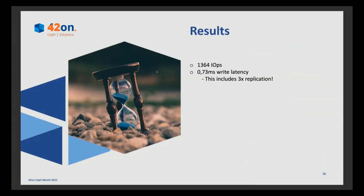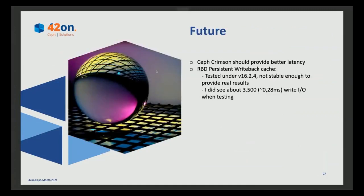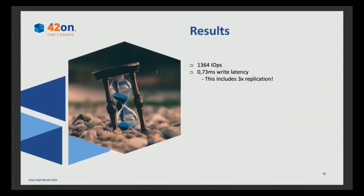Do we want more? Yes, always. What can the future bring? The Ceph Crimson project for redesigning the OSD should provide better latency, although Crimson itself is not currently focused on providing lower latency — they're just revisiting the code, and in the future it should improve. Then we have the RBD persistent write-back cache, which uses a local NVMe inside a hypervisor to cache I/Os. I tested this with Ceph 16.2.4, but it was not stable enough to present real results here. I did see about a 2x performance increase — around 3,500 IOPS — with much better write latency. I'll revisit this at a later stage when the code is more stable.